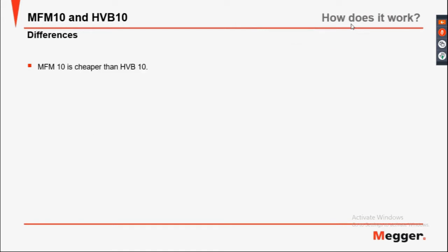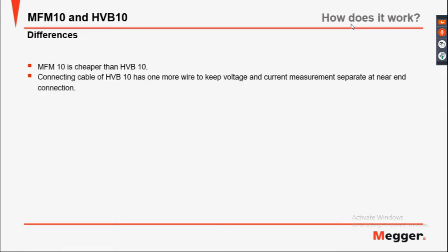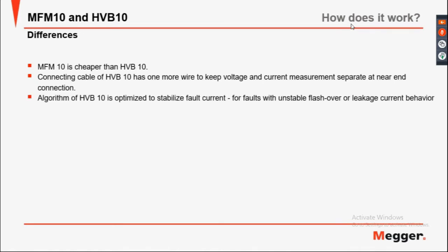Other differences: the MFM10 is cheaper than the HVB. The connection cable of the HVB has one more wire to keep voltage and current measurements separate at near-end connections. The algorithm of the HVB10 is optimised for stabilised fault cover — faults with unstable flashover or leakage current behaviour.